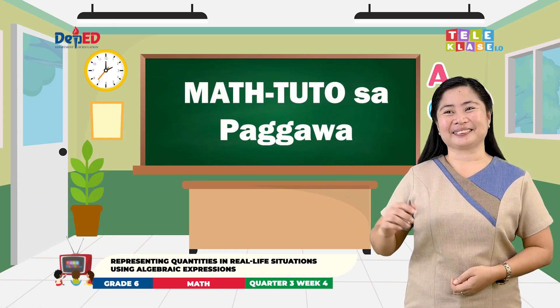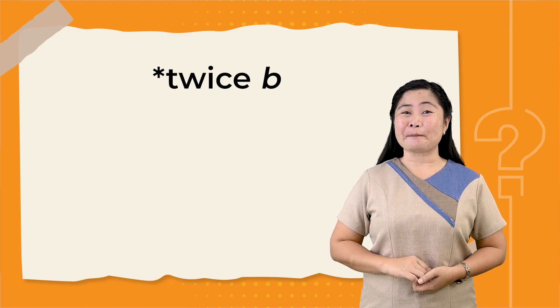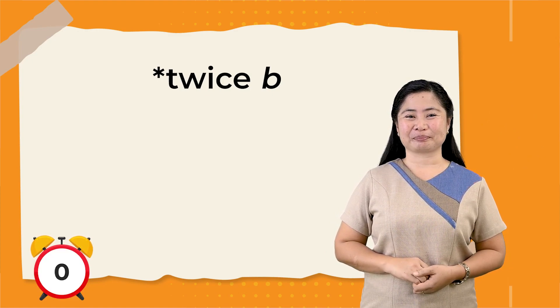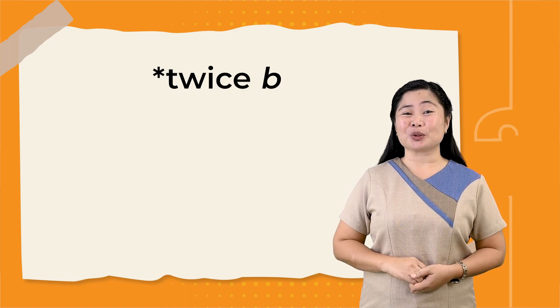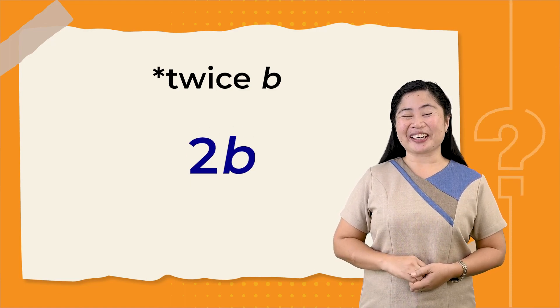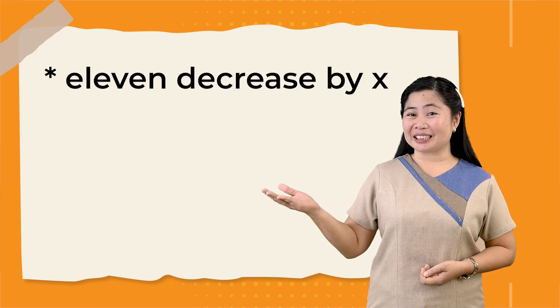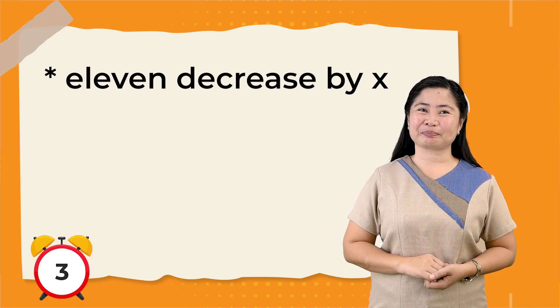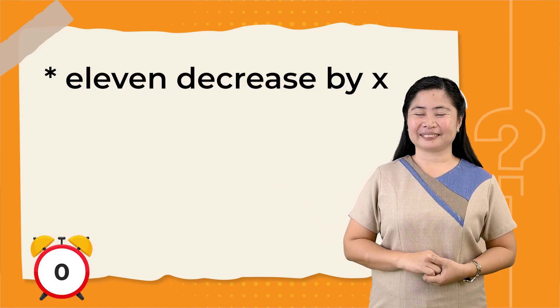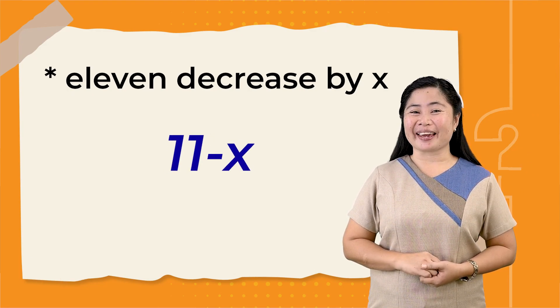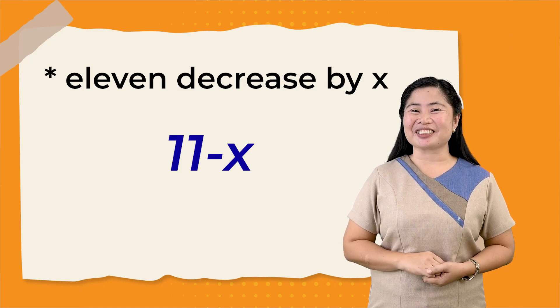Matuto sa Pagawa. Translate the phrases into algebraic expression or equation. First one: twice B. If your answer is 2B, congratulations! You got the correct answer. Another one: 11 decreased by X. If your answer is 11 minus X, congratulations! You got the right answer.